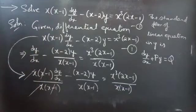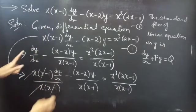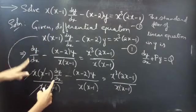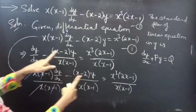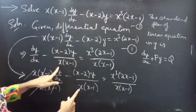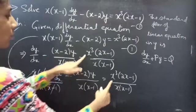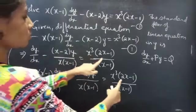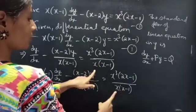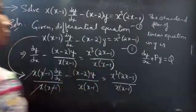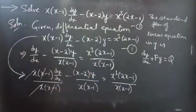x and (x minus 1) get cancelled and again you will get dy/dx minus (x minus 2)y divided by x(x minus 1) equals x cubed times (2x minus 1) divided by x(x minus 1).